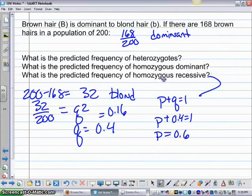So let's go back to our question. What's the predicted frequency for homozygous recessive? That's going to be Q squared. So that's 0.16. What's the predicted frequency of homozygous dominant? That's P squared. So that's going to be 0.6 squared, which equals 0.36.